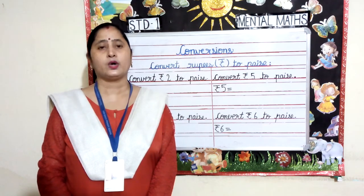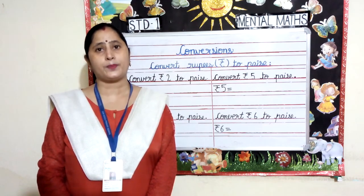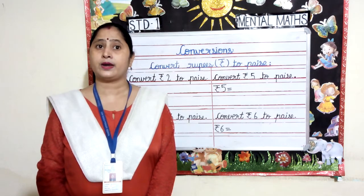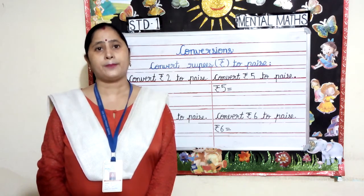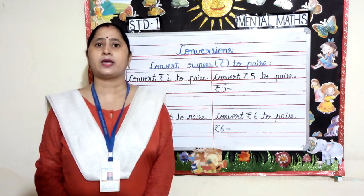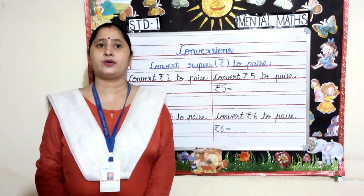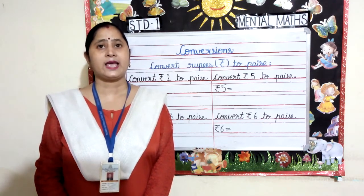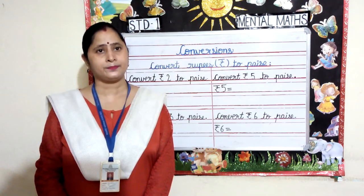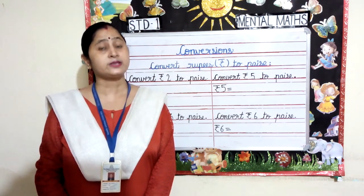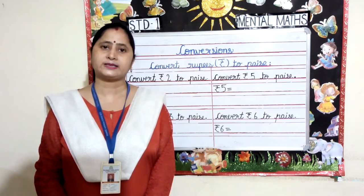To convert rupees to paise, we multiply by 100. And to convert paise into rupees, we divide by 100. We put a point between rupees and paise to write them in short. The point separates the rupees from the paise.